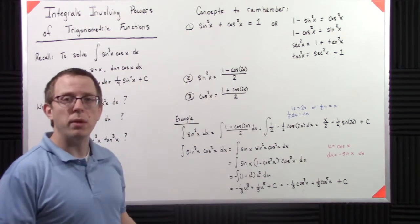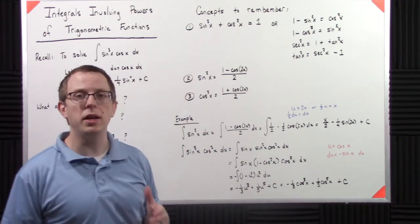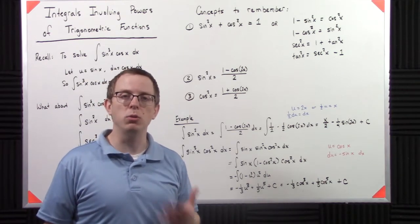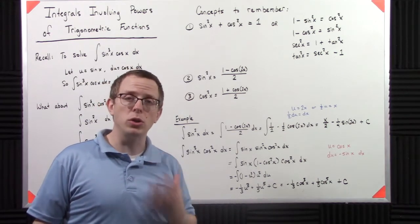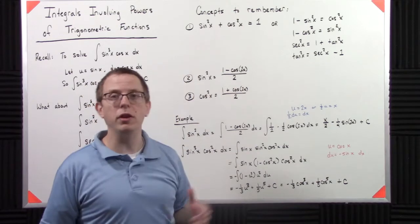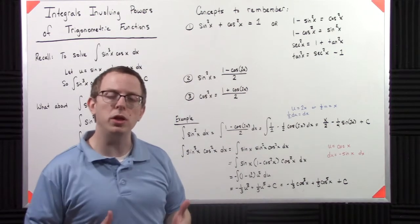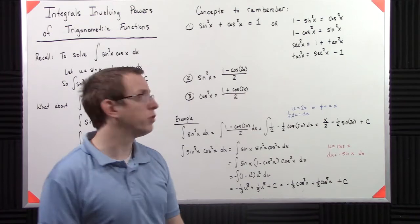So if we look at probably the most famous one, which is the Pythagorean identity, sine squared of x plus cosine squared x equals 1. Now that one, you don't actually use this one that often for these integrals. What you usually use are the variations or the manipulations of this formula.